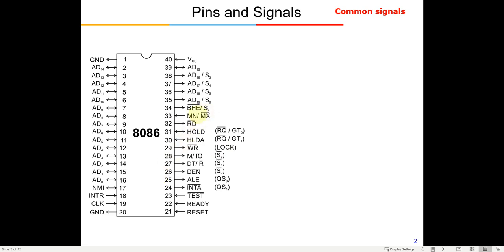The 8086 can work in two modes: min mode and max mode. Pin number 33 is labeled MIN/MAX-bar. When we give a 5-volt supply to pin 33, it works in min mode; when we ground pin 33, it works in max mode. In min mode the 8086 works as a single processor, whereas in max mode it works with more than one processor, controlled by a third-party IC synchronizing operations.